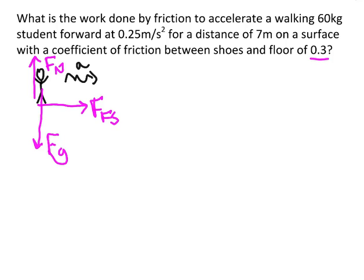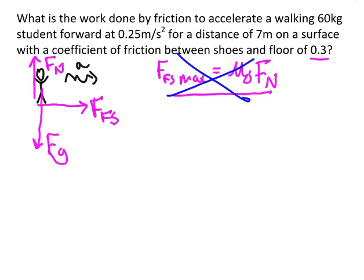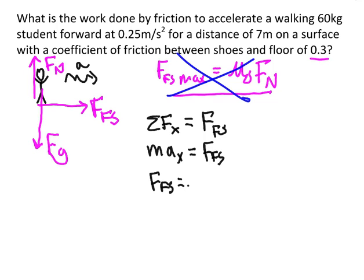The thing is, I'm not told that the student is almost slipping. The static friction force has this equation where the maximum static friction force equals mu_s times the normal force — but you only get to use this equation at the moment where your feet are just about to slip from underneath. There's nothing in this problem that says that, so I can't use that equation at all. Basically, I have no nice equation for the static friction force. The only way to get it is by summing forces in the x direction. The net force in the x direction is just the static friction force, and we know that equals mass times acceleration. So the static friction force is 60 kilograms times 0.25, which is 15 newtons.